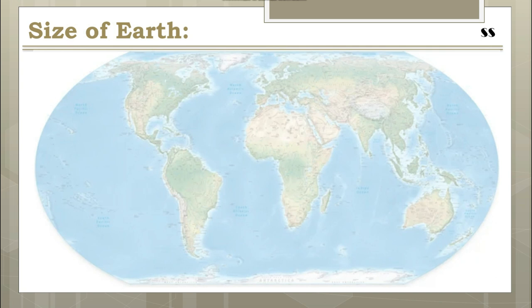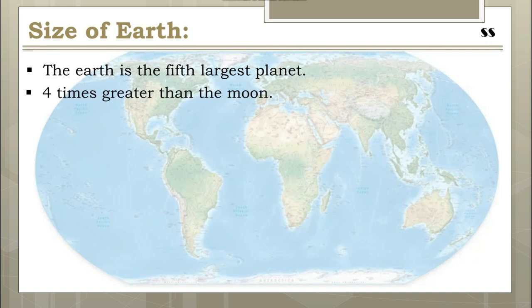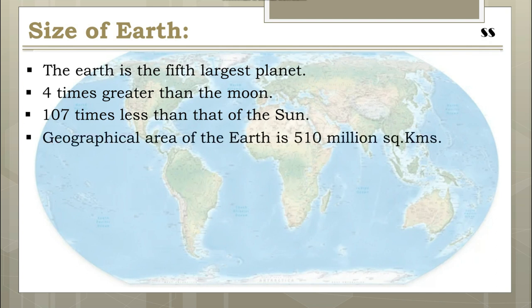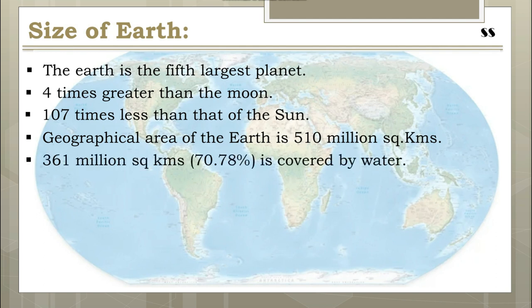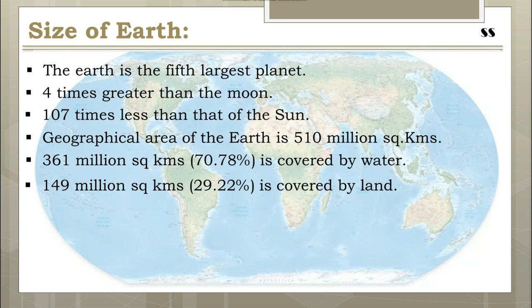Earth is the fifth largest planet in the Sun's family. The diameter of the Earth is approximately four times greater than the Moon and around 107 times less than the Sun. The total geographical area of the Earth is 510 million square kilometers, of which 361 million square kilometers is covered by water — that is 70.78 percent — and 149 million square kilometers, that is 29.22 percent, is covered by land. Thus the Earth has unequal distribution of land and water; the ratio between land and water bodies is 1:2.43.